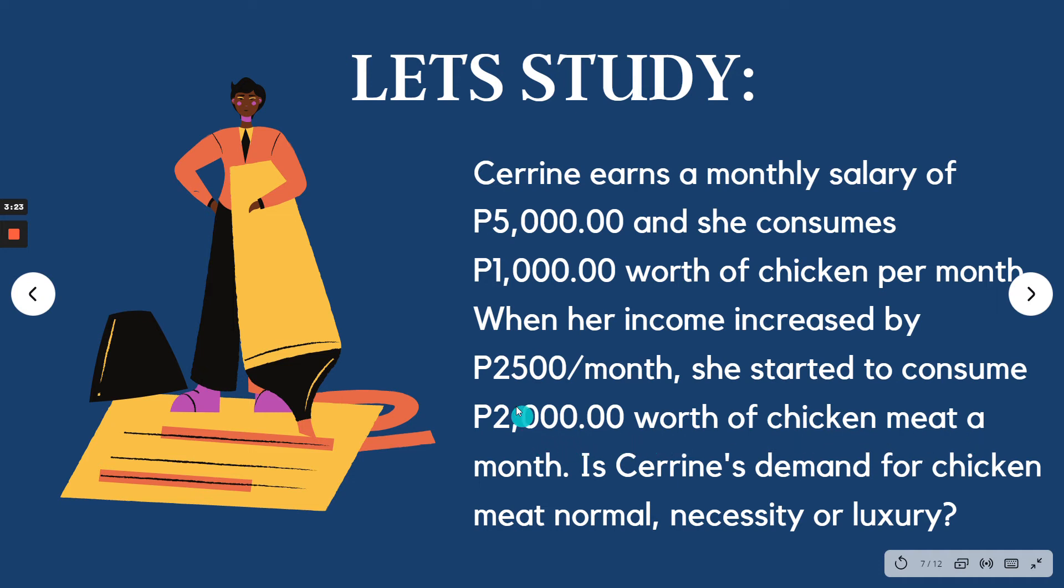So when it's 7,500 income, 2,000 pesos out of that 7,500 goes to chicken meat. Is Cerrine's demand for chicken meat normal, necessity, or luxury? We have to determine if it's normal, necessity, or luxury.